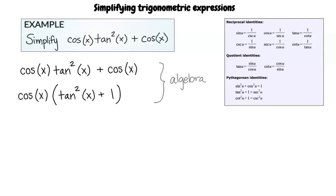You are correct. We factor cosine of x from each term to get cosine of x times tangent squared of x plus 1. Do you know what to do next?